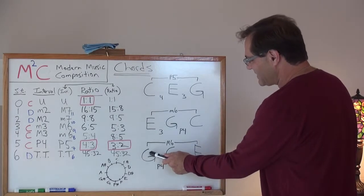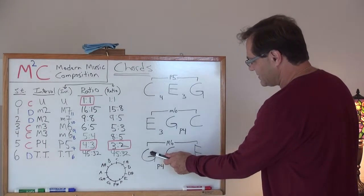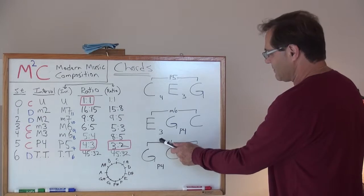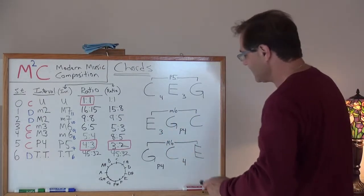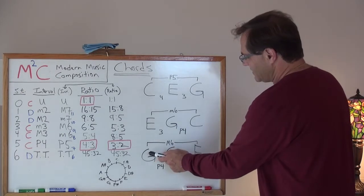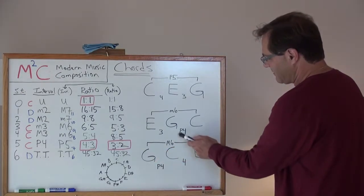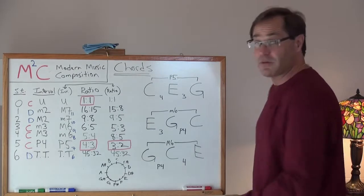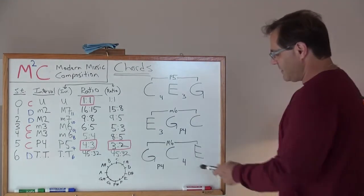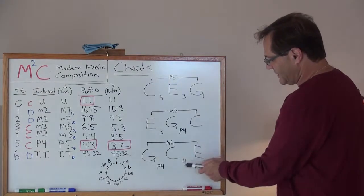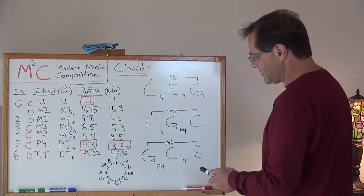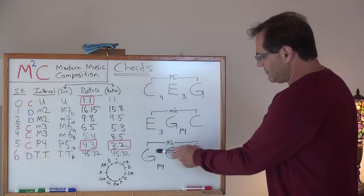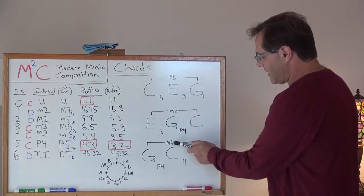Then let's do our second inversion where I just now take the G and, I'm sorry, the E and pop it over next to the C. I've got G, C, E. I've got this interval preserved, P4, which is our perfect fourth. And the interval between C and E is four. And that gives us a major third.